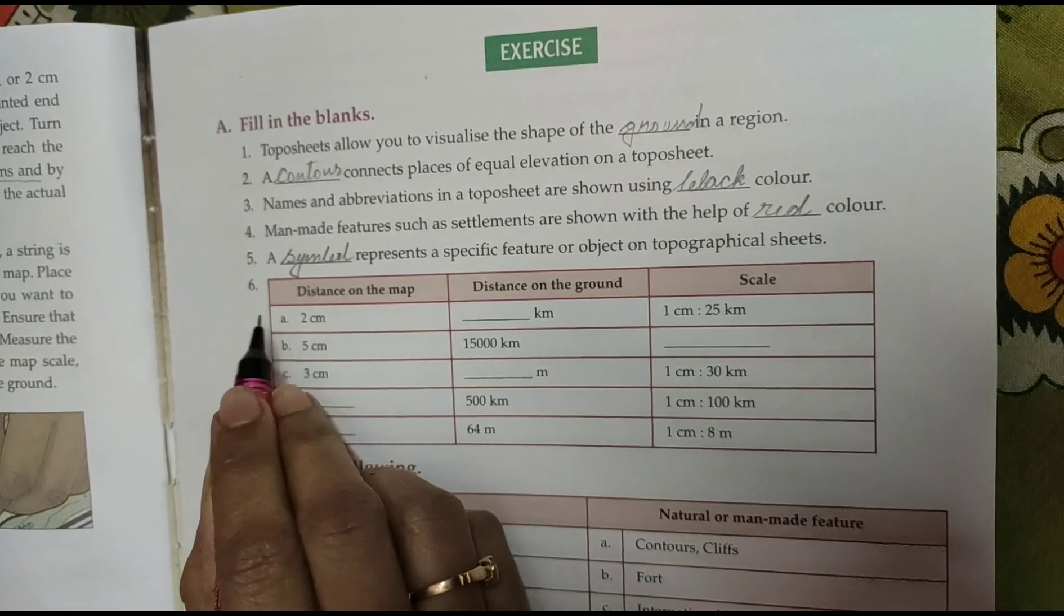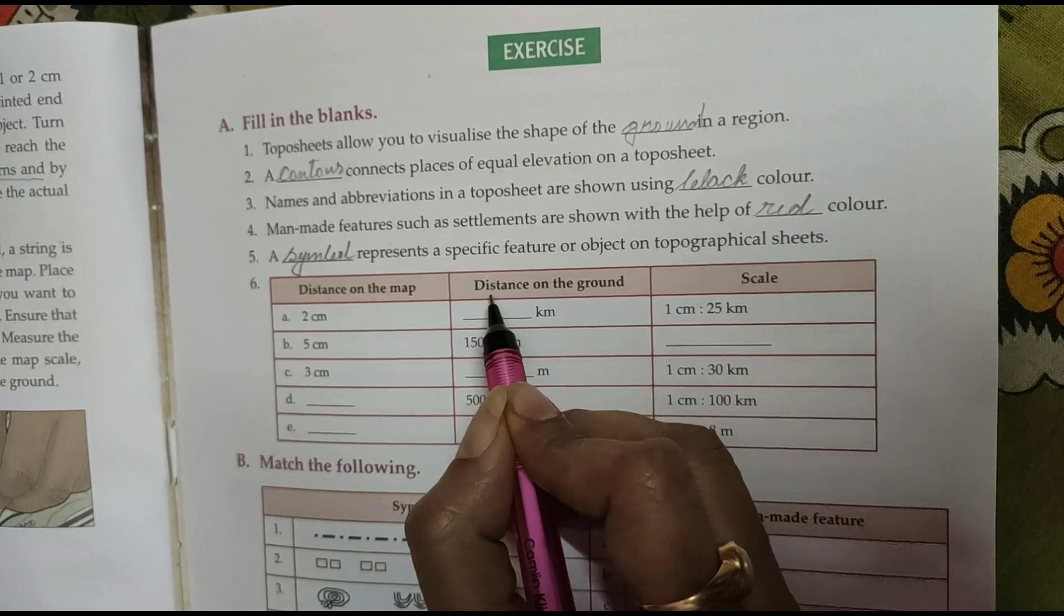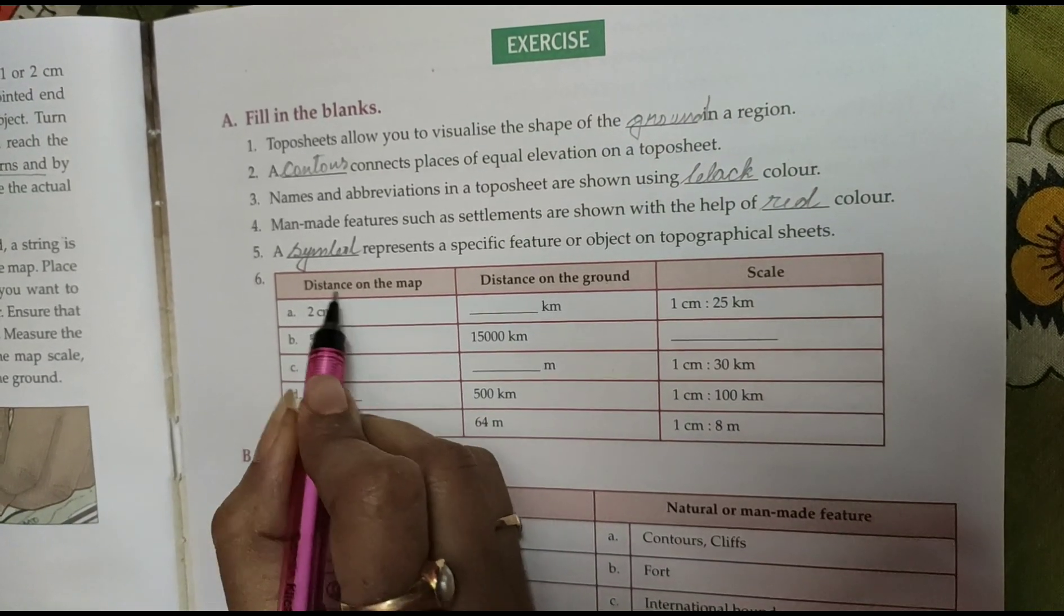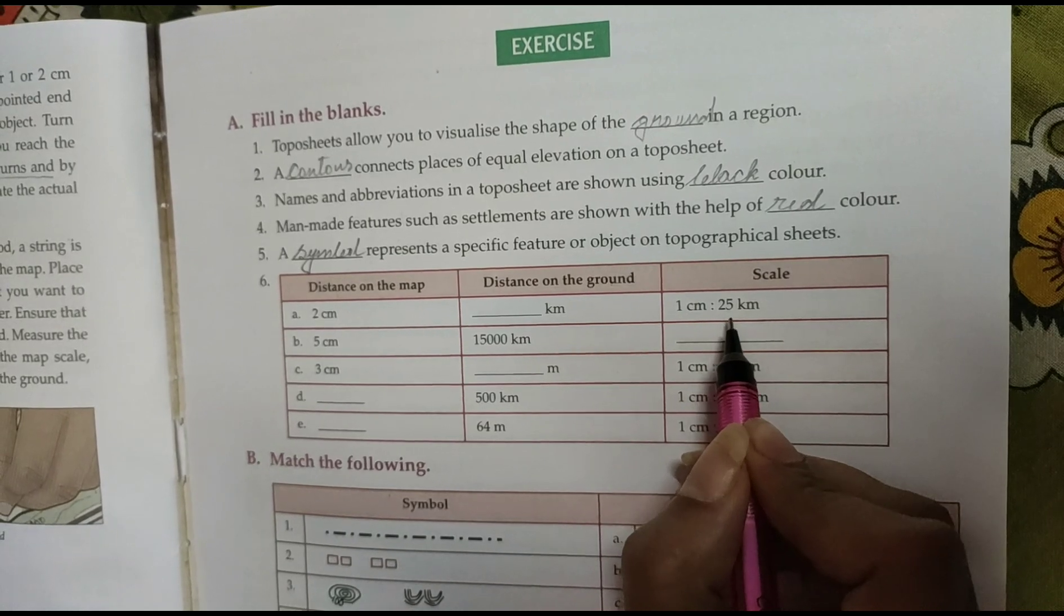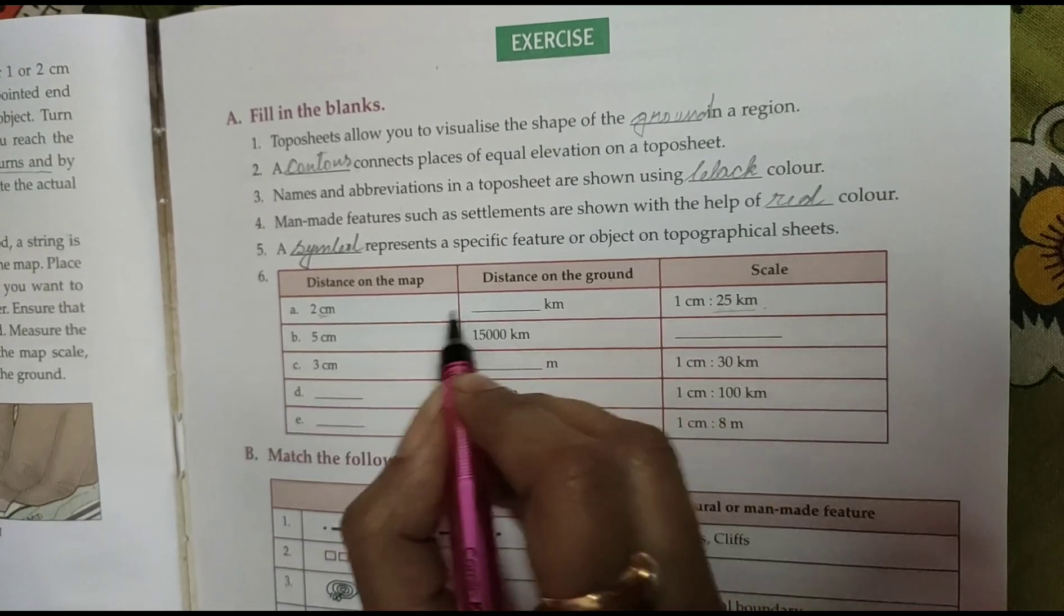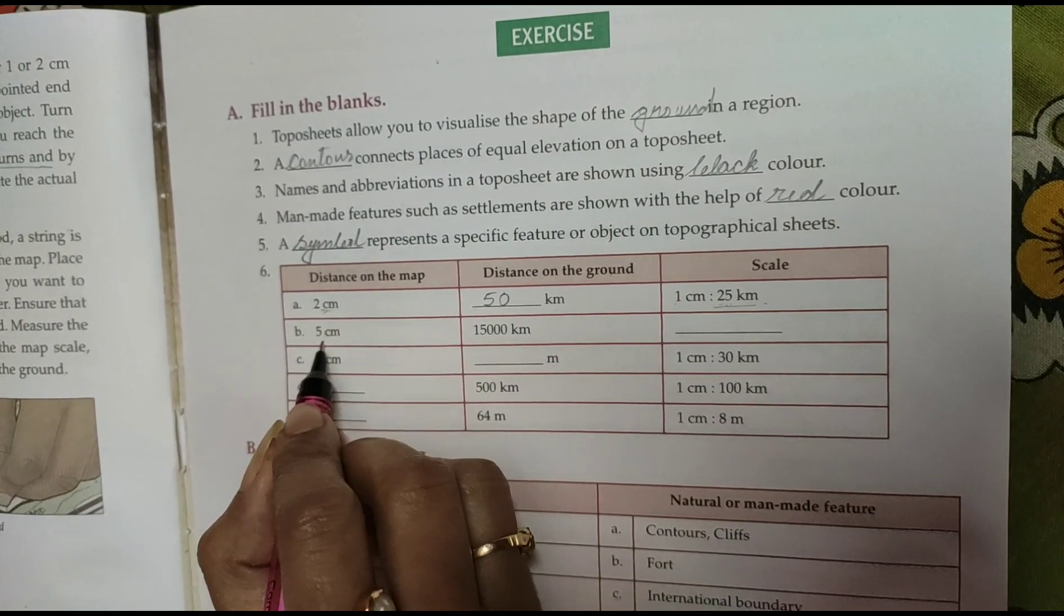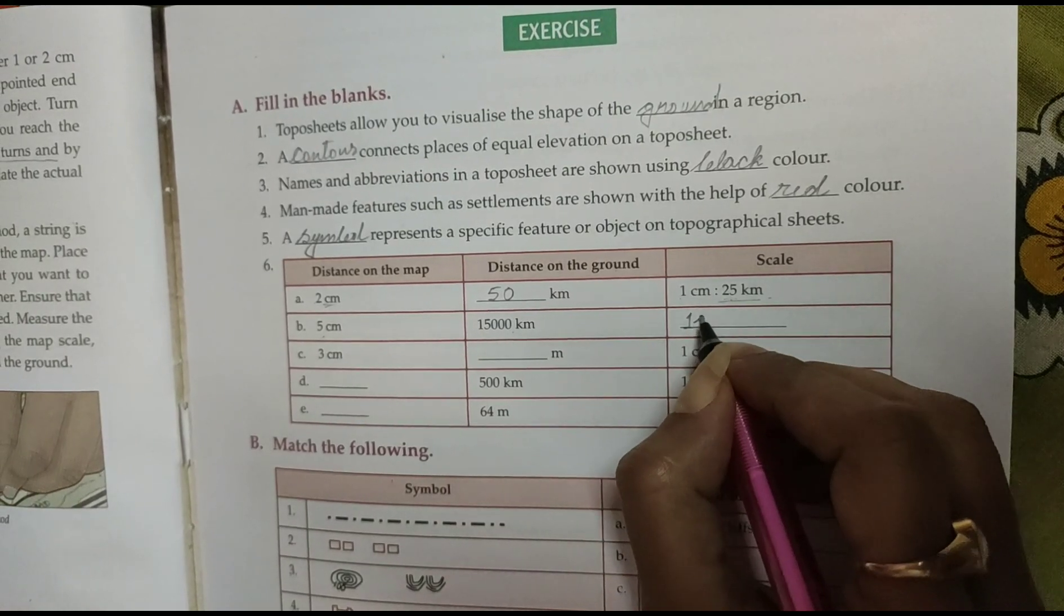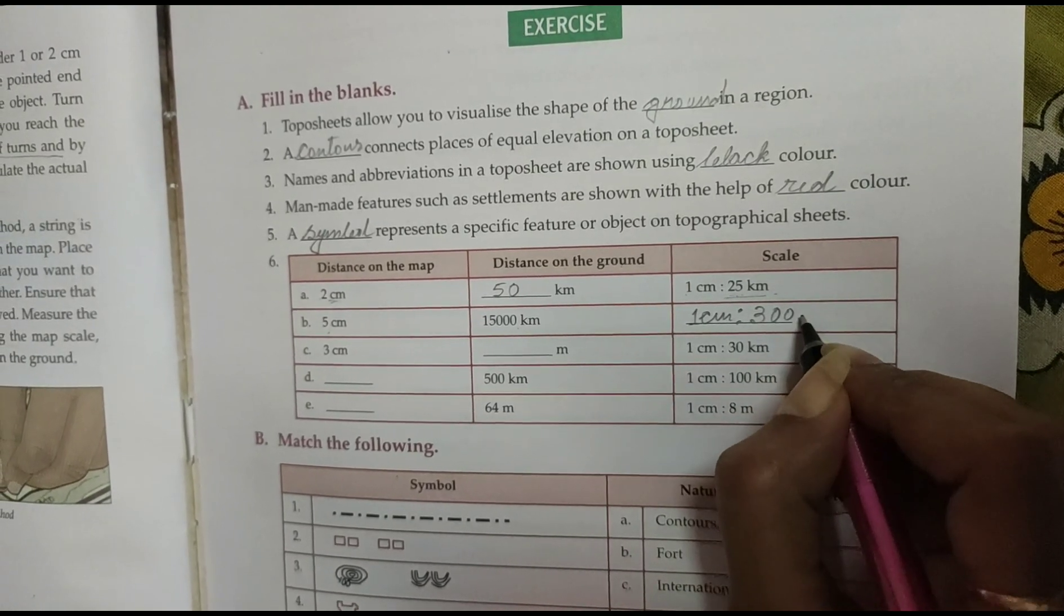Next is a chart showing the distance on map. It is given some distance on ground and scale. First is 2 cm on the map, 1 cm is to 25 km. 1 cm showing 25 km on the ground, so 2 cm will be 1 cm is to 25 km means 2 cm 50 km. 5 cm, 15,000 km. That is 1 cm is to 3,000 km.